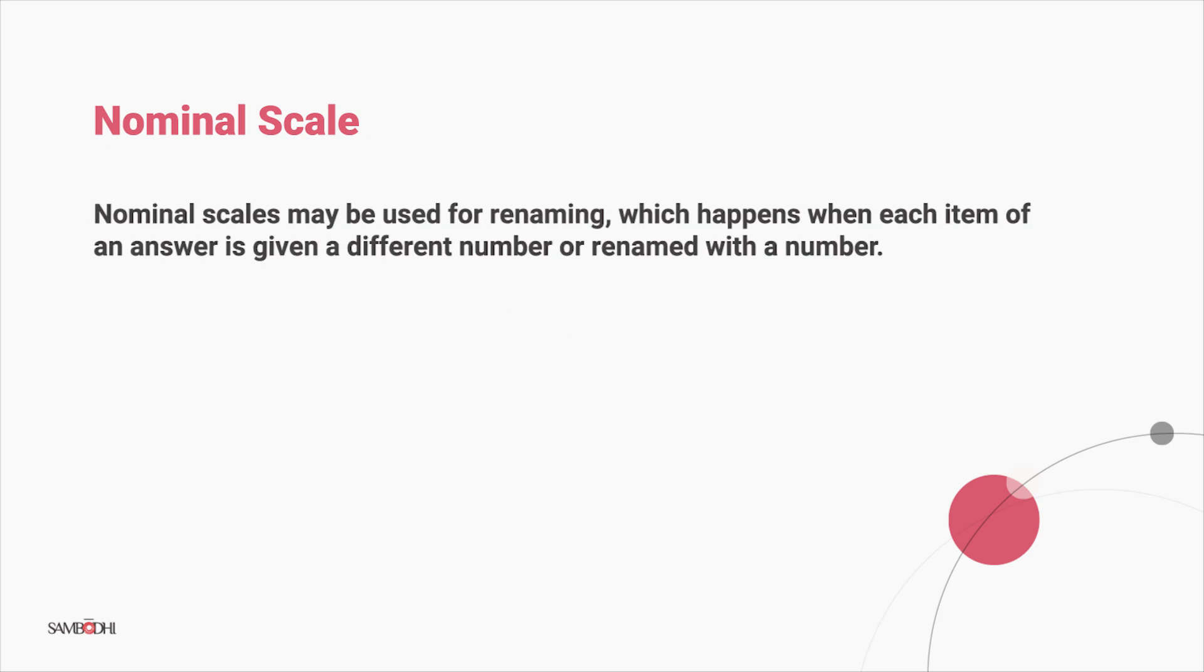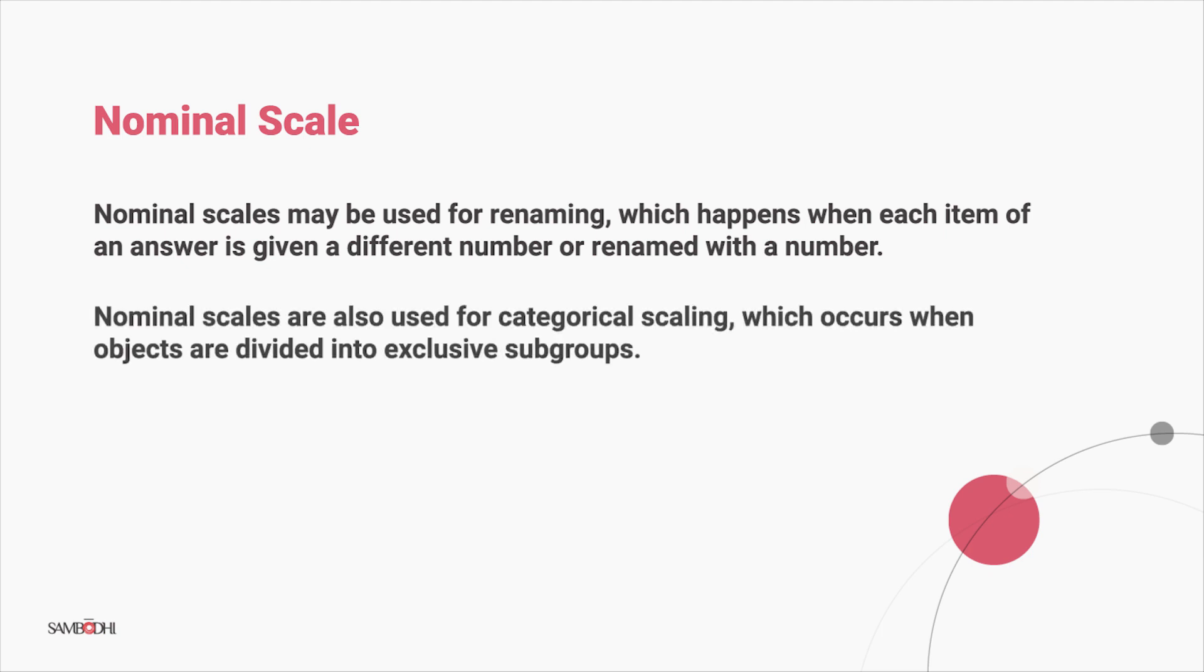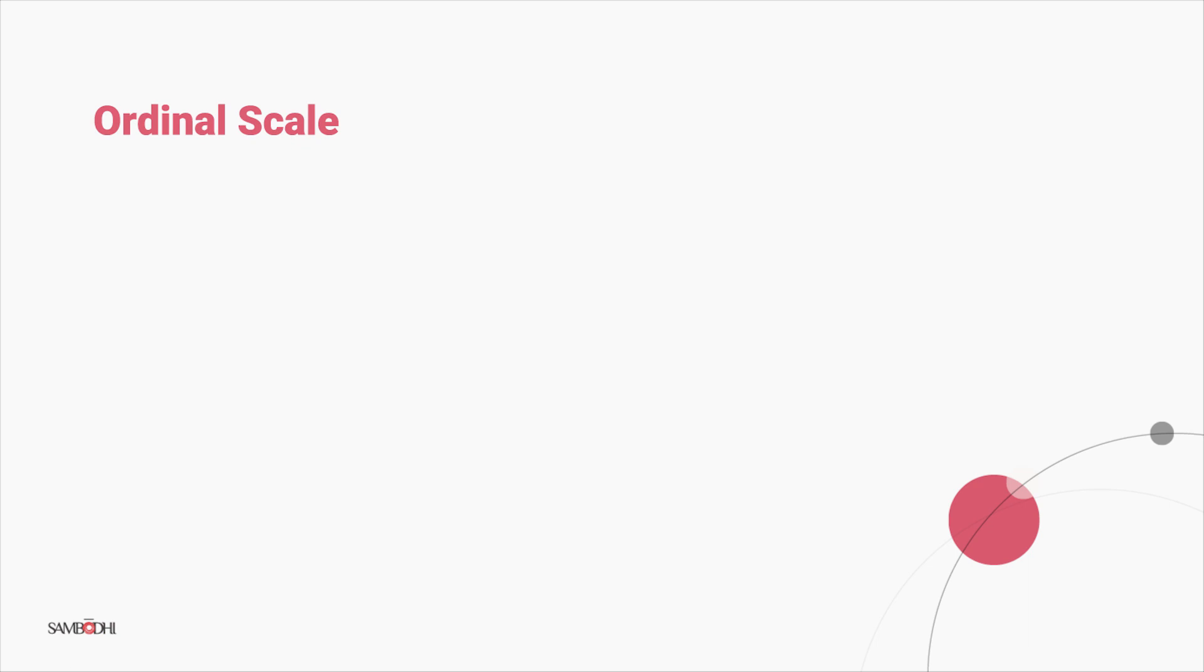Nominal scales may be used for renaming, which happens when each item of an answer is given a different number. Nominal scales are also used for categorical scaling, which occurs when objects are divided into exclusive subgroups. Let's move on to the ordinal scale.